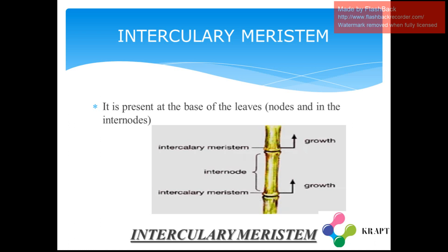Now let us learn about intercalary meristem, which is the last part of the meristematic tissue. It is present at the base of the leaves, which is at the nodes and internodes. In the diagram you can see the intercalary meristem, the internode, and where the growth occurs.